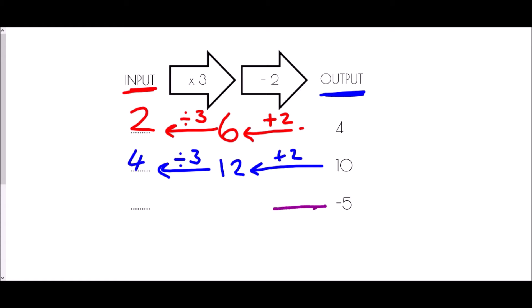Finally, if the output was negative five: instead of taking away two I add two, so negative five plus two is negative three. Then instead of multiplying by three I divide by three, so negative three divided by three is negative one.